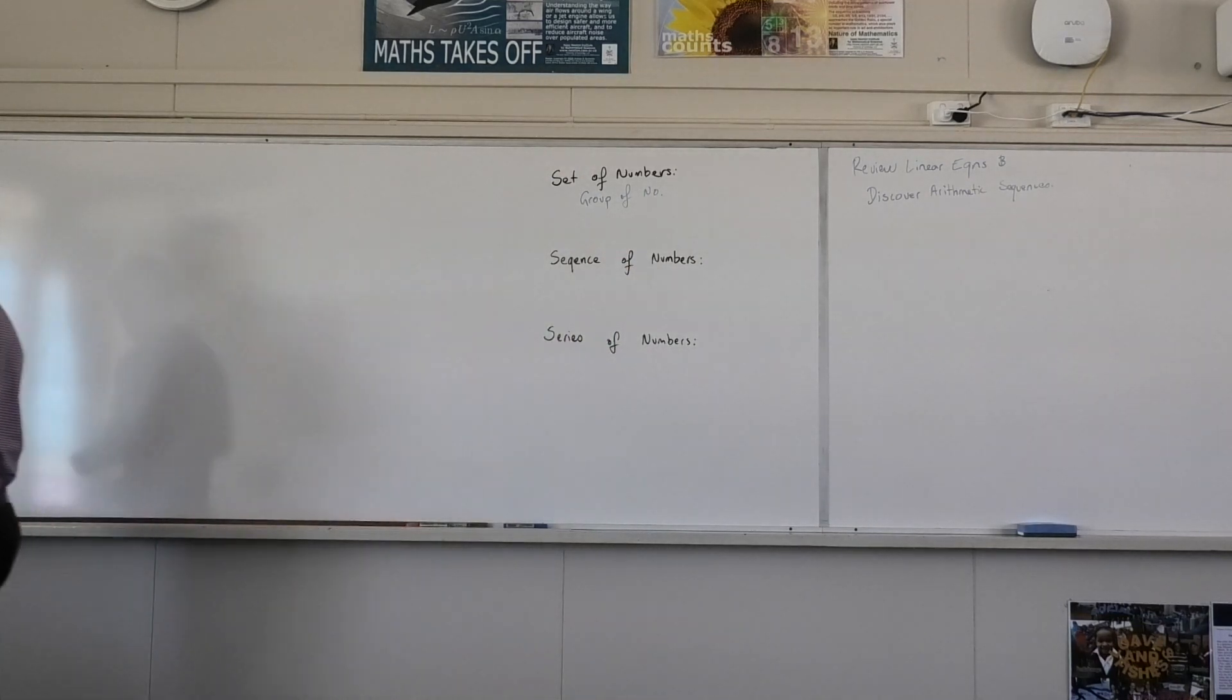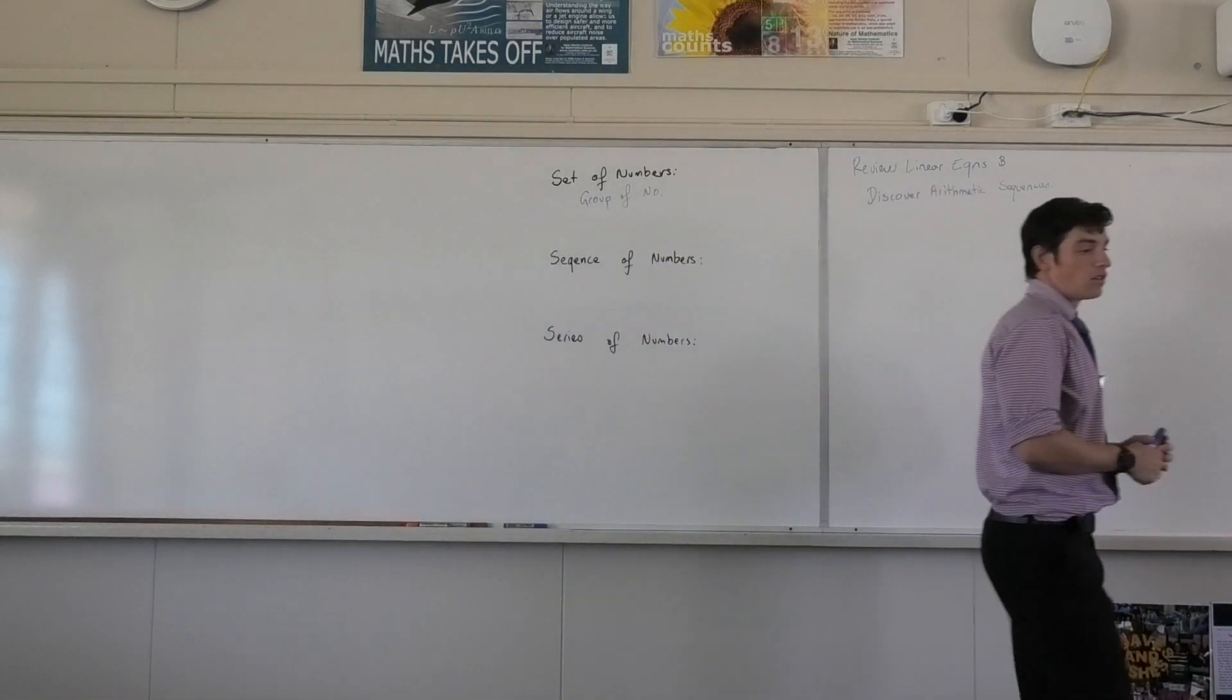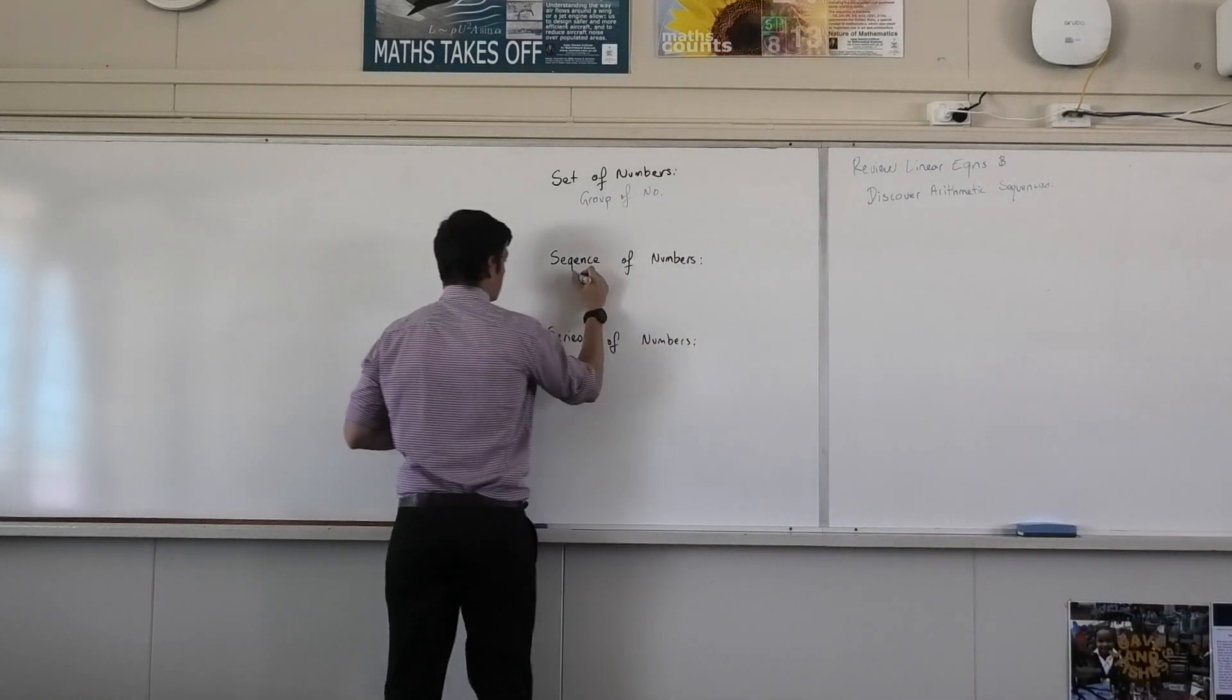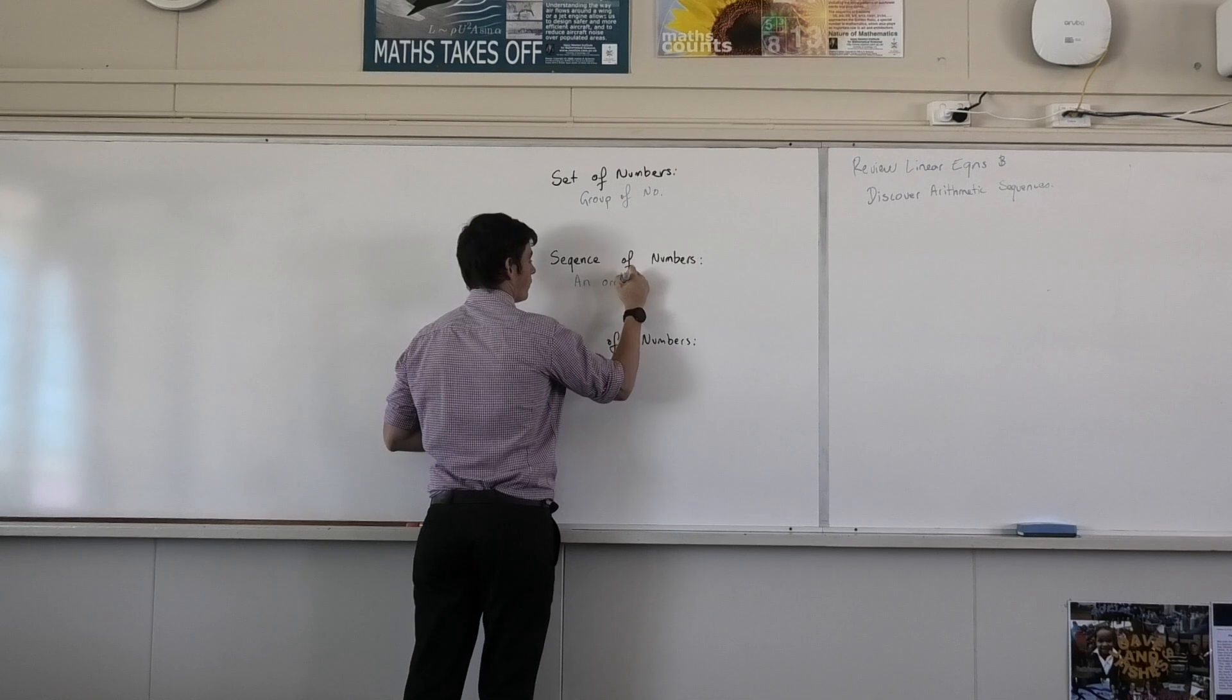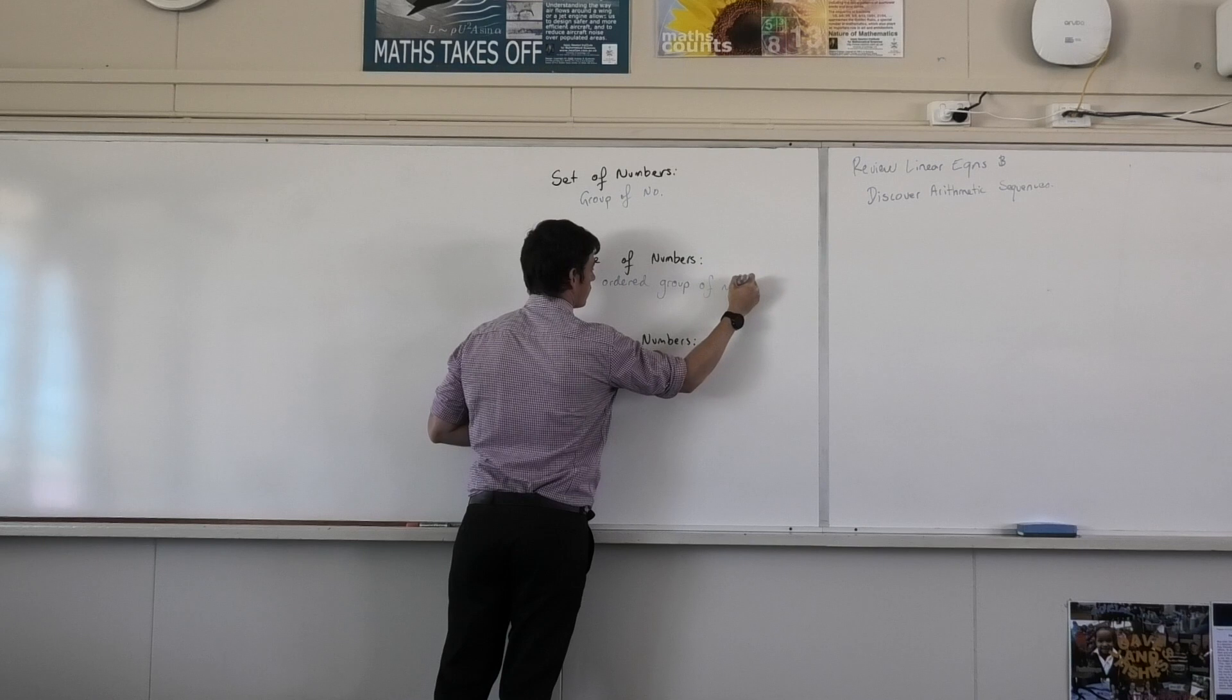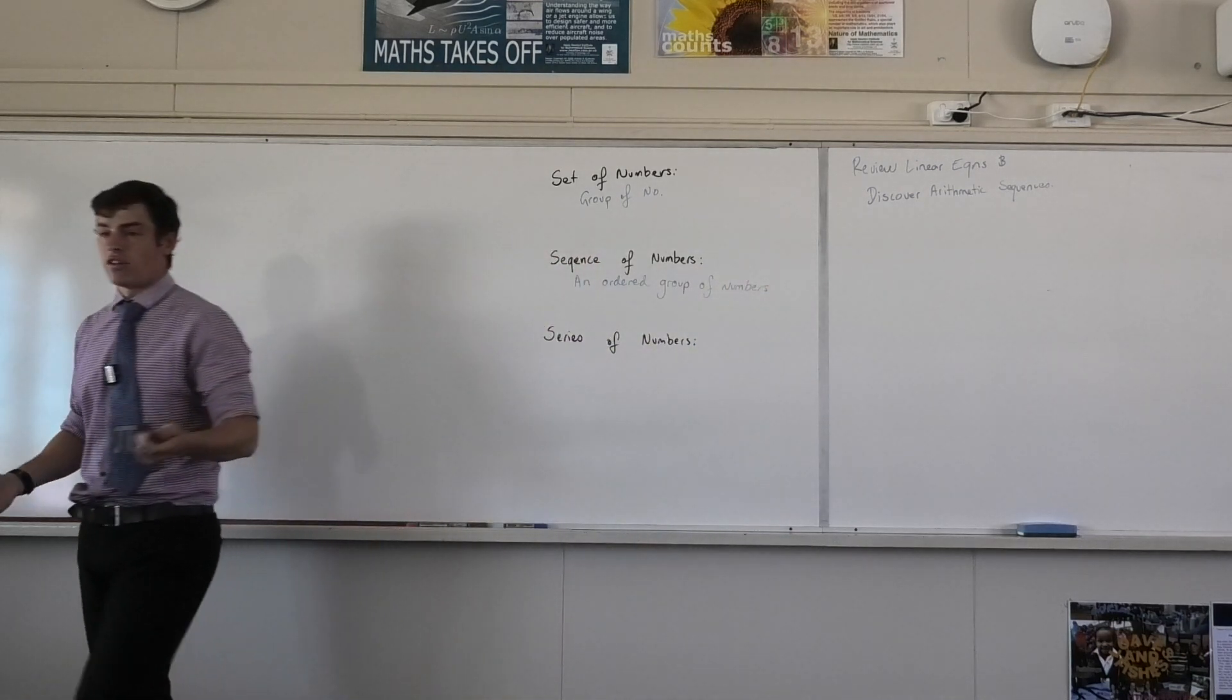I've got a sequence of numbers now. Has something changed? There's a specific order, so it's an ordered group of numbers, correct? So it's like an ordered set of numbers, correct?